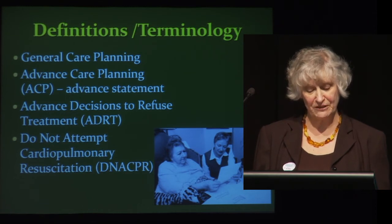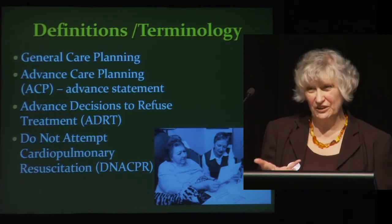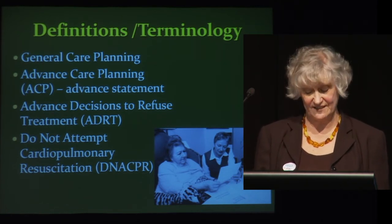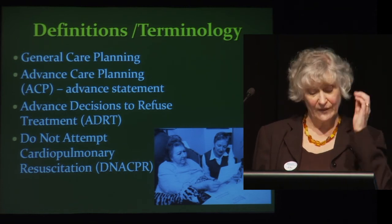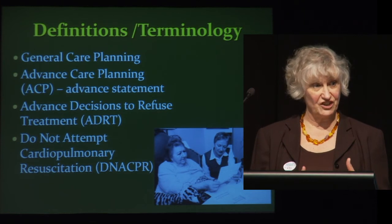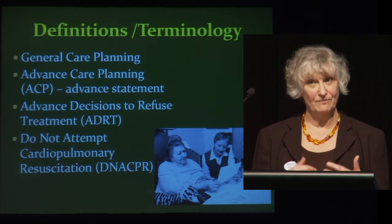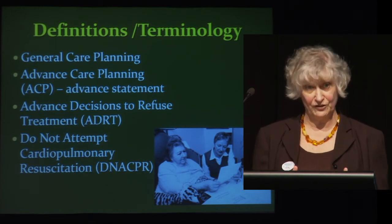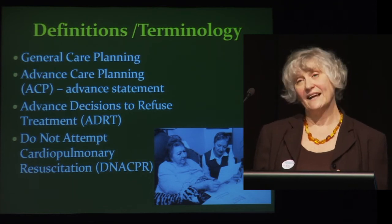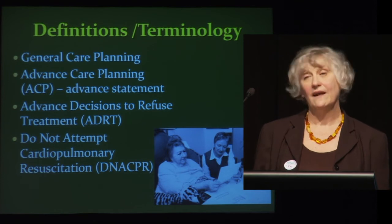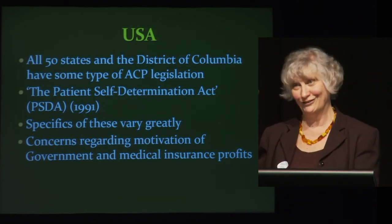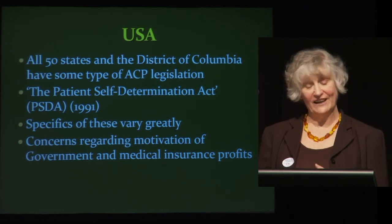An advanced decision to refuse treatment is usually very specific — about a particular treatment you don't want. It's legally binding, signed and witnessed, and the person must have capacity. As for do not attempt cardiopulmonary resuscitation, that is usually done with a clinician. It's often the clinician's responsibility and much more related to acute events in hospitals. It is important that if resuscitation is anticipated to be potentially successful, the clinician's judgment takes precedence. All of those things are available on the NHS website.